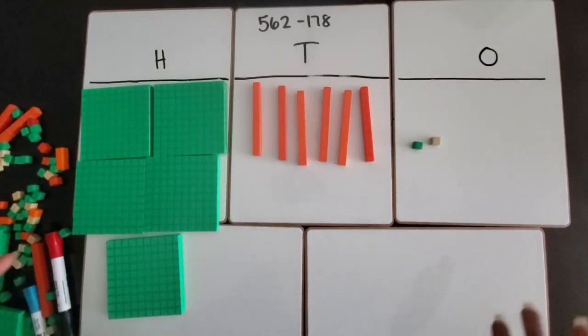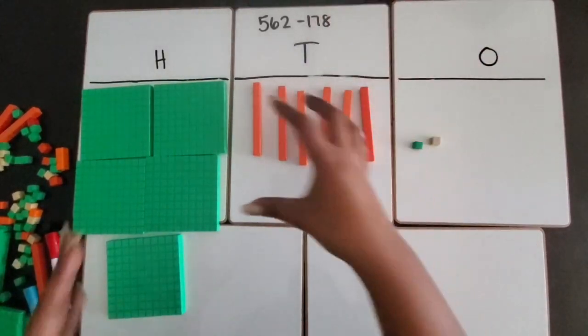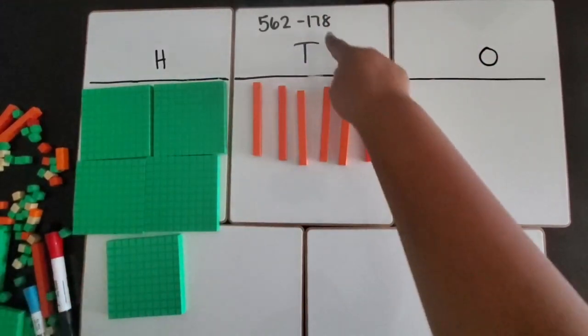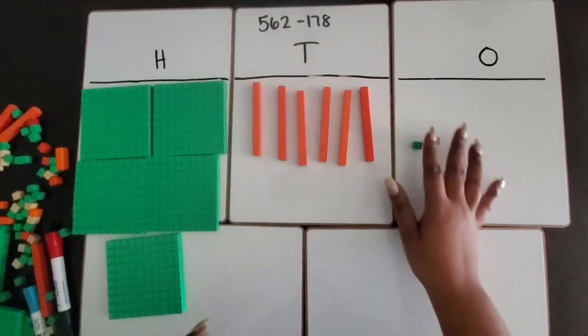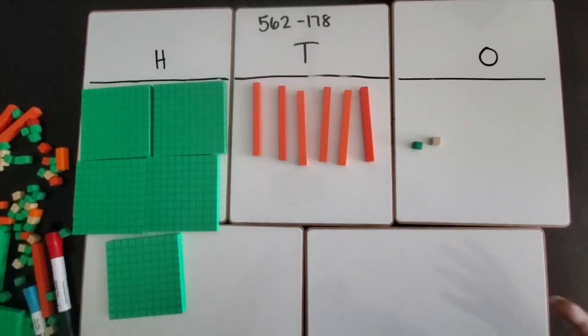Now, unlike addition, we're not going to build the second number because with subtraction we're taking out of what we already have. So I already have 562, I want to subtract the number 178. I'm going to start in the ones place.